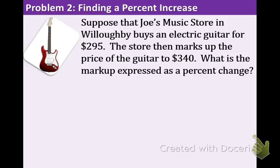In example 2, suppose that Joe's Music Store in Willoughby buys an electric guitar for $295. The store then marks up the price of the guitar to $340. What is the markup expressed as a percent change? The store is buying the guitar and they want to make a profit off of it, so they're marking up the price. That means we're going to be finding a percent increase.